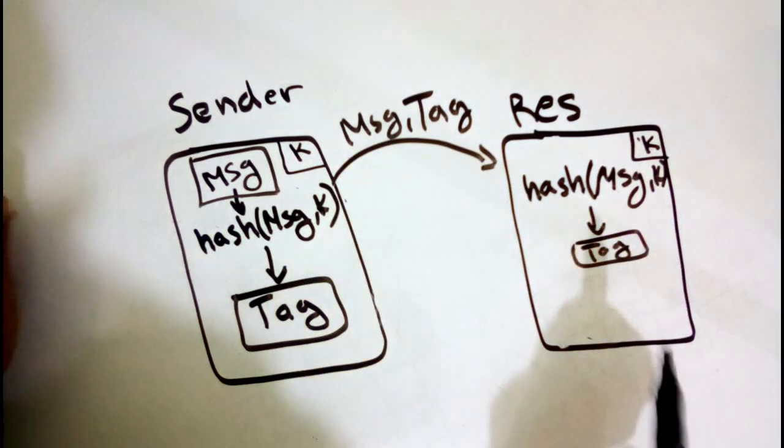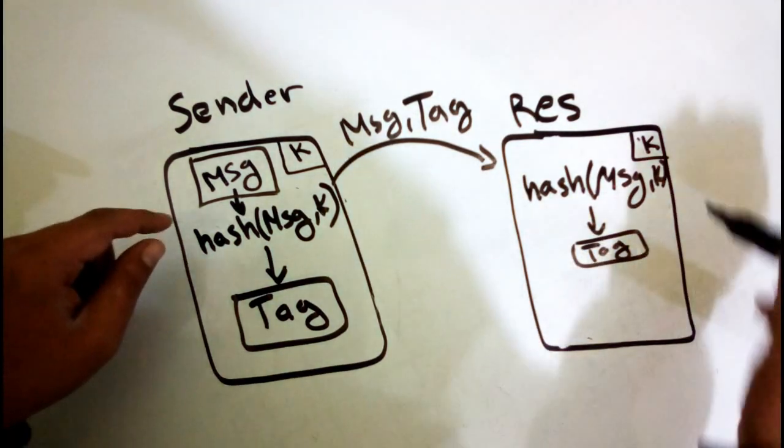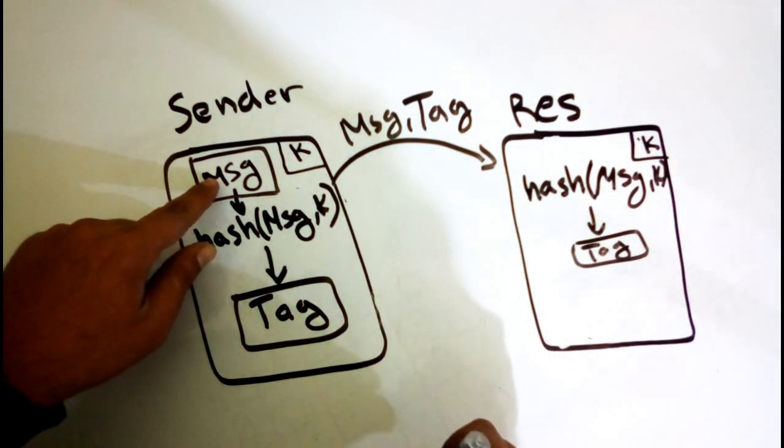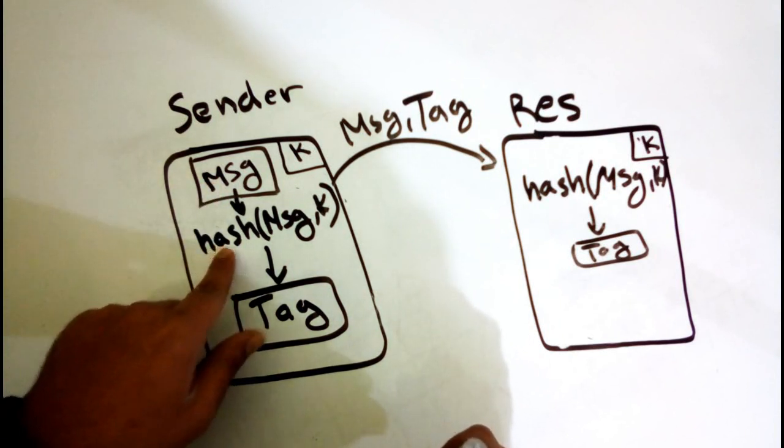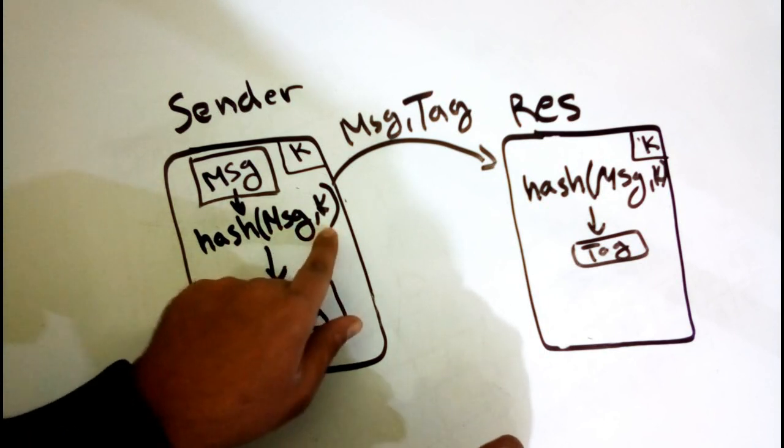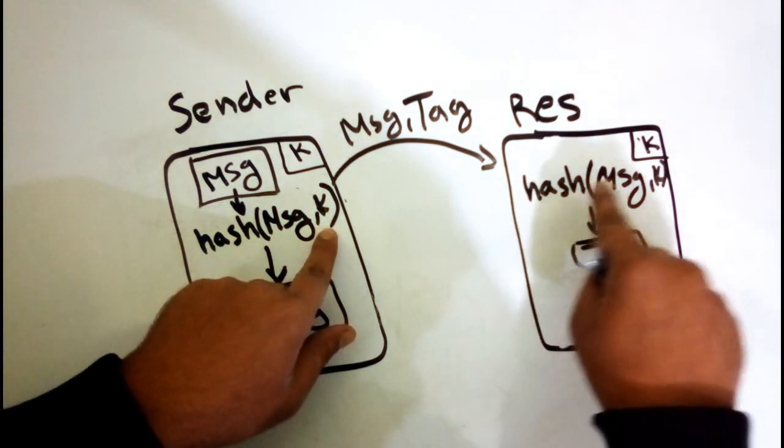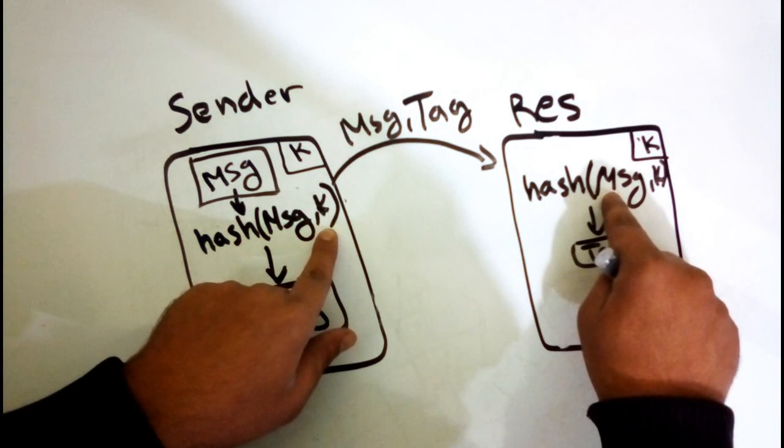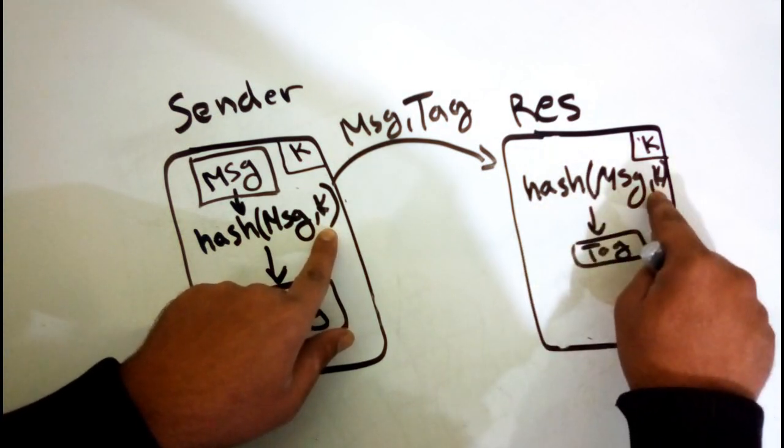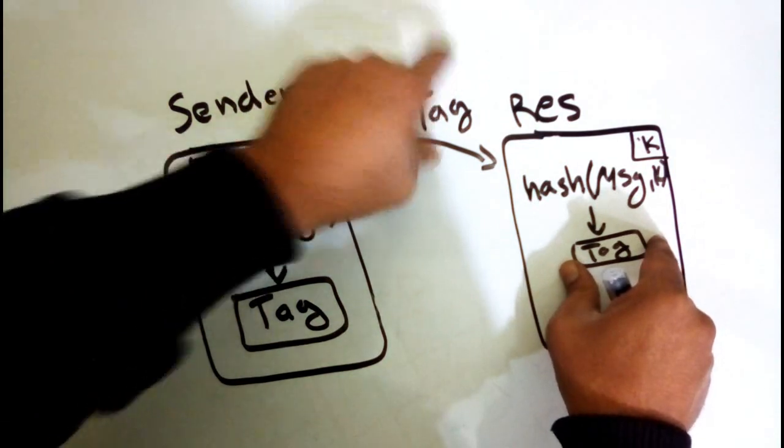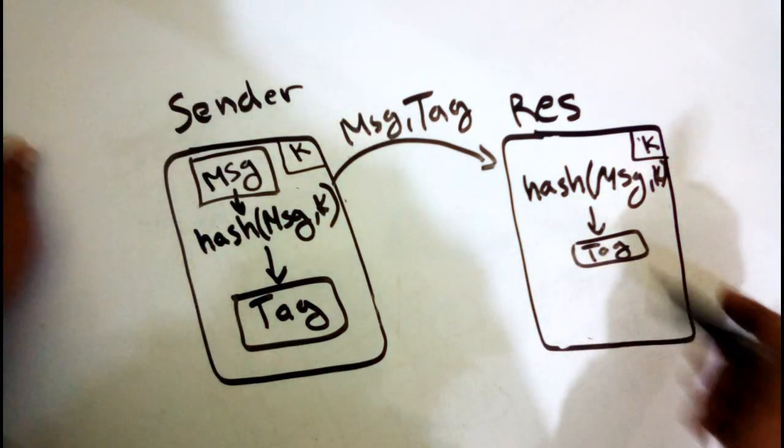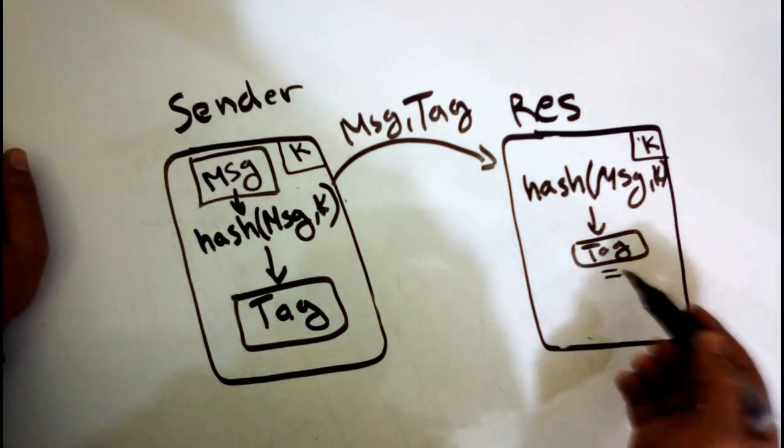Notice that we hash the message with the MAC function and this key, and here also we hash this message with the MAC function with this key. So this tag must equal this. If this tag is different than this tag...